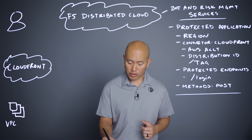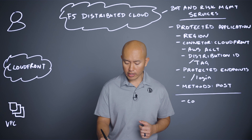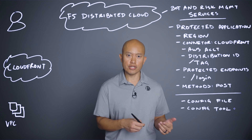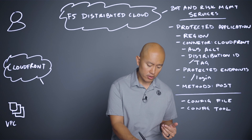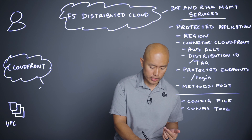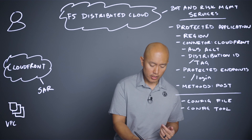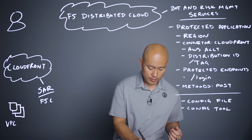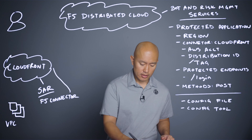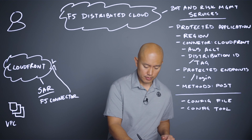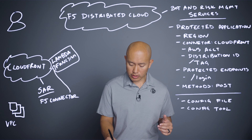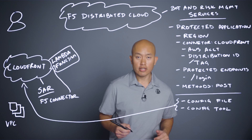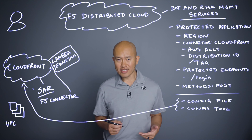When you've completed that configuration you're going to get a config file and a config tool. Over in CloudFront you'll open up what's called the Serverless Application Repository, or SAR, and find the F5 connector in there. You would then deploy that into a Lambda function, grab the previously downloaded config file and installer tool, upload them into AWS, and run the installer tool.